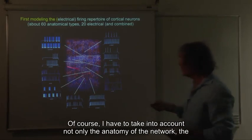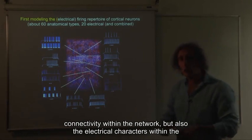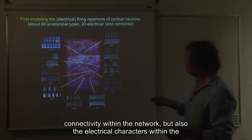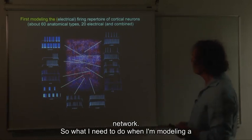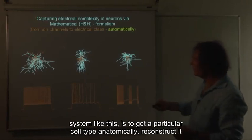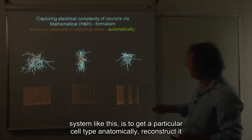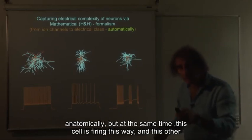Of course, I have to take into account not only the anatomy of the network, the connectivity within the network, but also the electrical characters within the network. So when I'm modeling a system like this, I get a particular cell type reconstructed anatomically. This cell is also reconstructed anatomically, and this cell is also reconstructed anatomically.